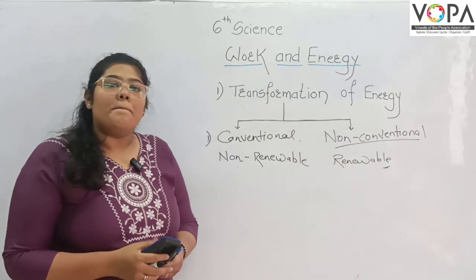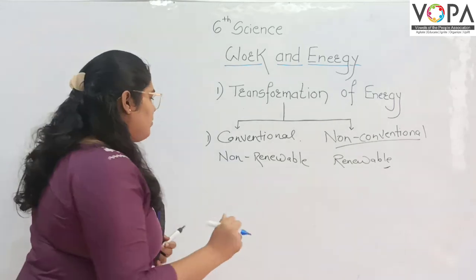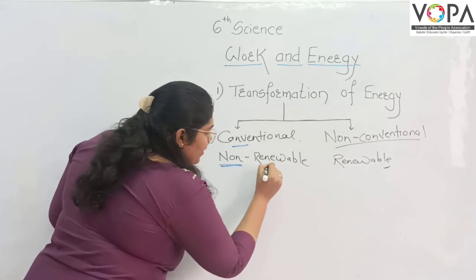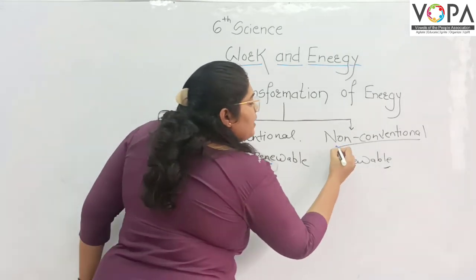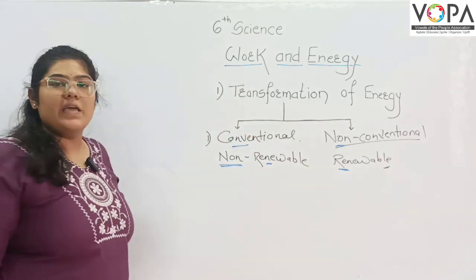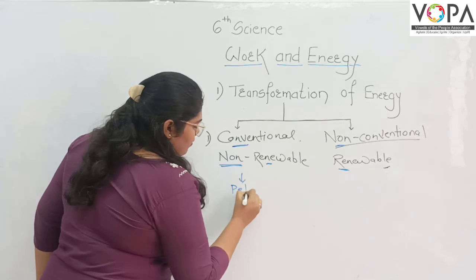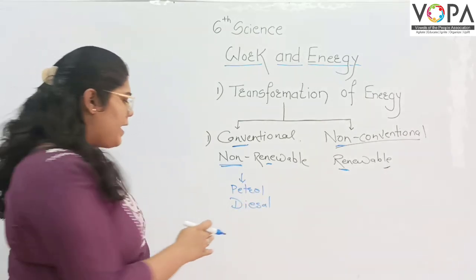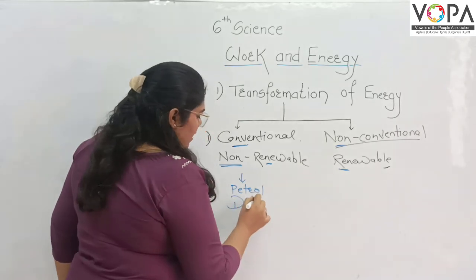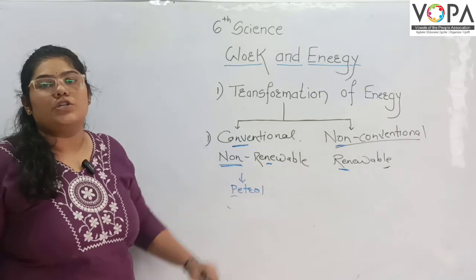Conventional means non-renewable, and non-conventional means renewable. I will tell you some examples. Conventional energy examples include petrol and diesel — these are non-renewable energy sources.